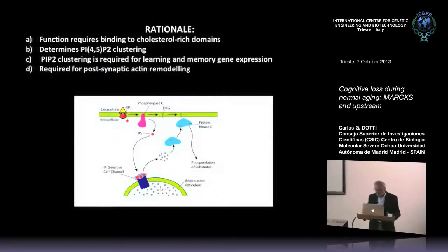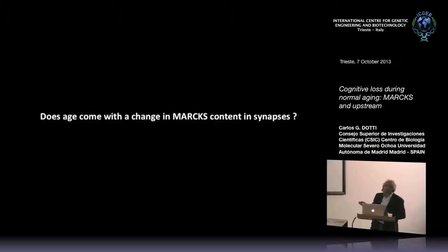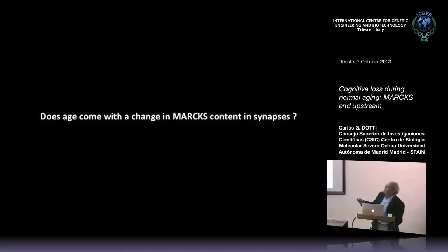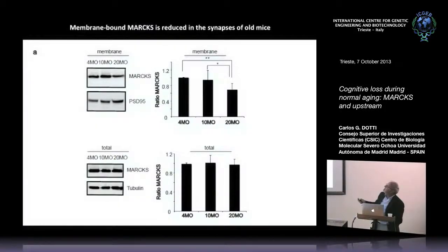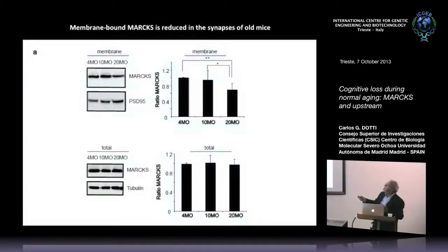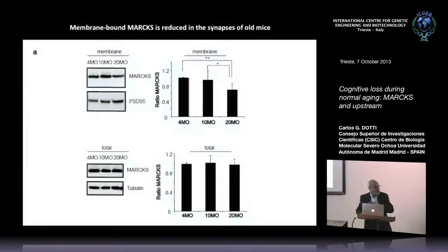We chose MARCKS as an educated guess. The question we asked is: does age come with a change in MARCKS content in synapses? We saw cholesterol was low. Intuitively, as you age, because of the loss of cholesterol, you would expect MARCKS to lose its capacity to associate with the plasma membrane in synapses — and the answer is yes. We see a fairly significant decrease in the membrane-associated MARCKS at 10 months in synapses. However, the cytosolic pool is normal. It's only the membrane-associated pool in the synaptic fraction that decreases between 10 and 20 months.